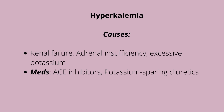Hyperkalemia is anything above 5.0 potassium level. Causes include renal failure, adrenal insufficiency, acidosis, and excessive potassium intake — note that many salt replacements are high in potassium. Medications that can cause hyperkalemia include potassium-sparing diuretics like spironolactone, and ACE inhibitors, which increase the level of potassium in the body.